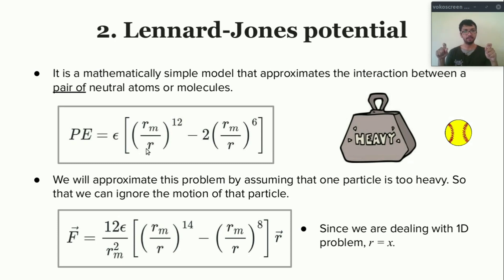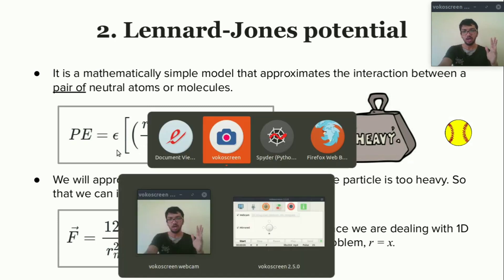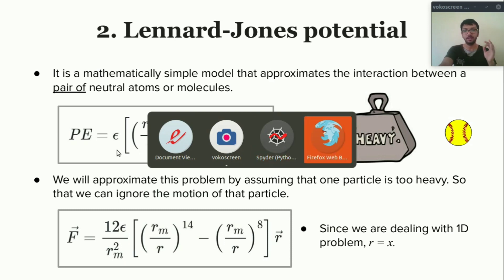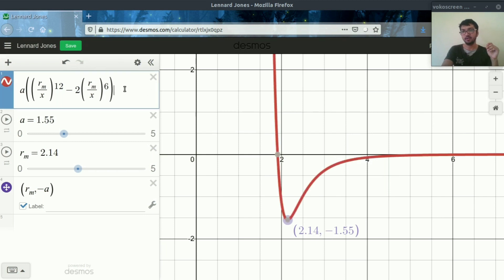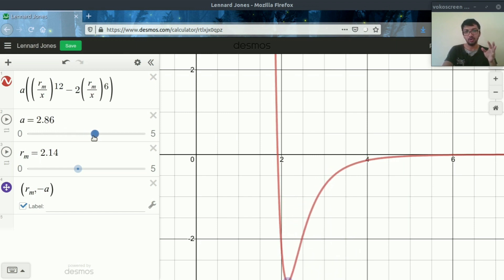This small r is the distance between two atoms. Now focus on these two parameters, RM and epsilon. Let me show you the importance of these two parameters. This is the equation of LJ potential which I have written in this Desmos grapher, and this is the potential energy curve, the LJ potential. Let's vary this a, which is acting as epsilon, and see what we are getting. If we increase the value of epsilon, the value of minima is decreasing. So we can say that epsilon is the strength of potential.